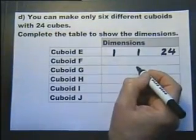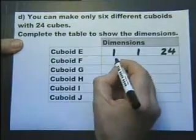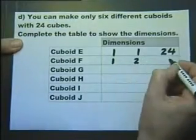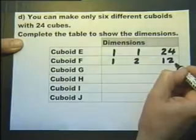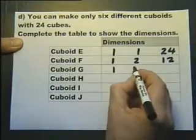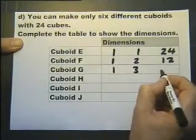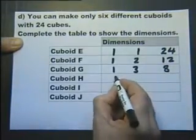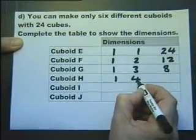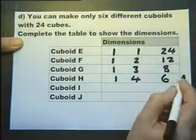So the other ways we could do it would be to have 1 x 2 x 12 which is 24. Or we could have 1 x 3 and then 3 x 8 which is 24. Or we could have 1 x 4 times 6 that would still give us 24.